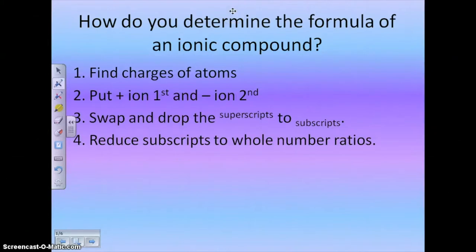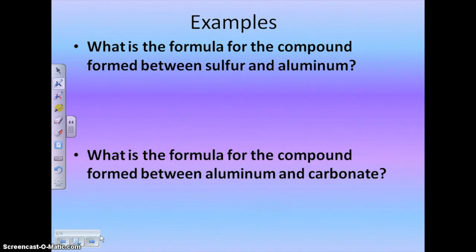In this podcast, we're going to talk about how to write the formula for an ionic compound. There are four steps involved. First, you want to find the charges of all of the atoms that you have. Then you're going to put the positive ion first and the negative ion second. You're going to swap and drop your superscripts to subscripts, and you're going to reduce your subscripts to whole number ratios.